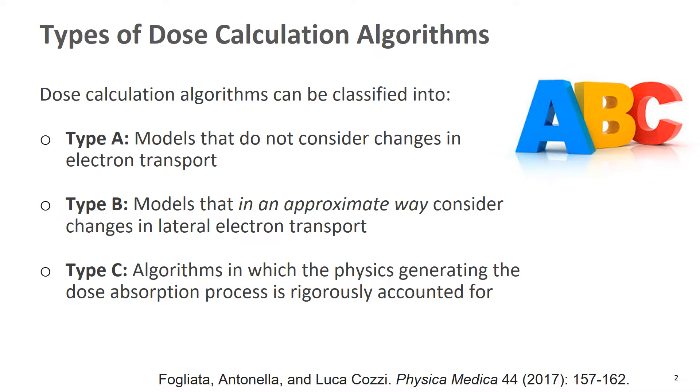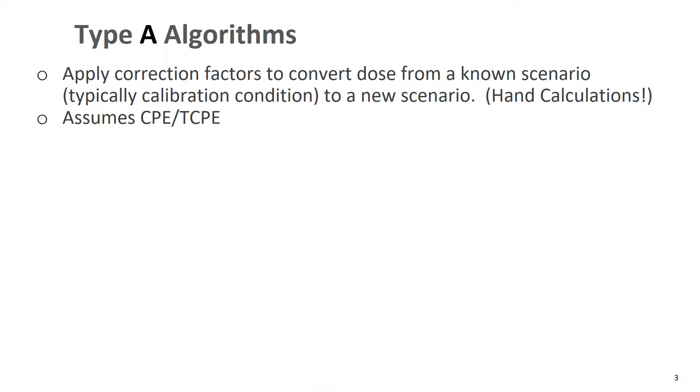We'll get into a little more detail about each of these. So let's start with type A algorithms. These are those that apply a series of correction factors to convert dose from a known scenario, which is typically the calibration condition, to a new scenario.